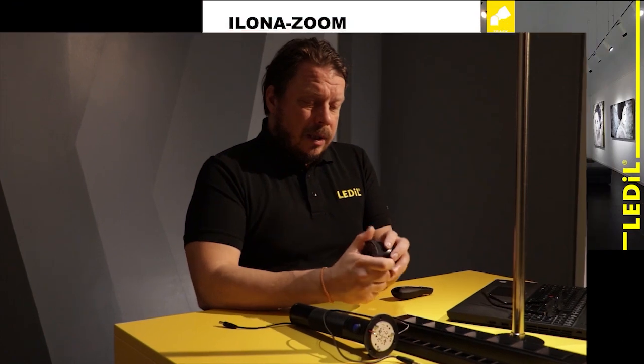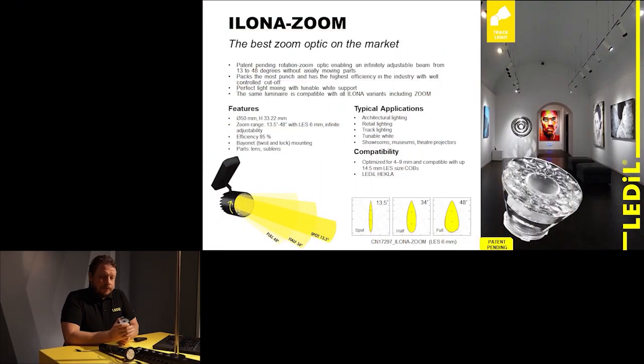So let's look at Ilona specs in more detail. Ilona family is 50 millimeter diameter so it fits into a huge range of existing luminaire bodies, making your design simple and easy. The height of the lens is roughly over 3 centimeters, so it's rather compact in size. As I mentioned, Ilona Zoom has a zoom range from almost 10 degrees to almost 50 degrees with the LES 6 millimeter, and you have infinite beam angle options in between.